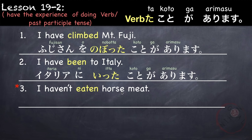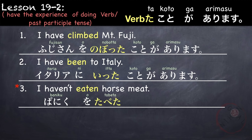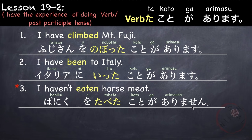Next is the negative form — ga arimasen. So here we have a negative sentence: I haven't eaten horse meat. Horse meat is baniku — niku means meat, and for horse meat we add ba before niku: baniku. Followed by o. And then our verb is to eat, which is tabemasu. In ta form, it is tabeta. Followed by koto, and then ga arimasen, because this is in the negative form. Baniku o tabeta koto ga arimasen.